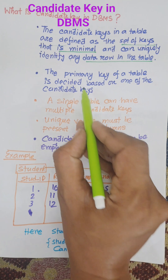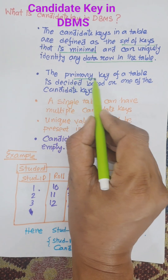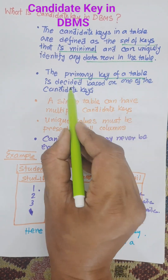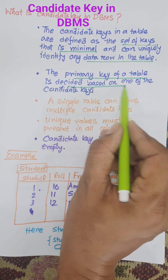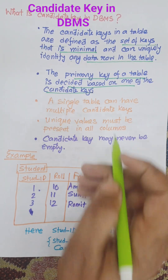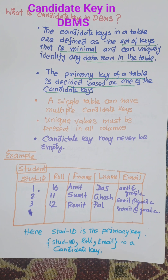The primary key of a table is decided based on one of the candidate keys. When you select the candidate keys, among all the candidate keys we need to select the primary key.